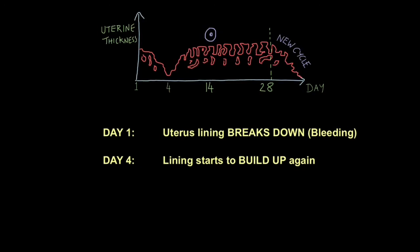The next stage occurs at around day four, when the uterine lining starts to build up again and thicken. A very significant event occurs at day 14, and that is when an egg cell is released from one of the ovaries. This is called ovulation.